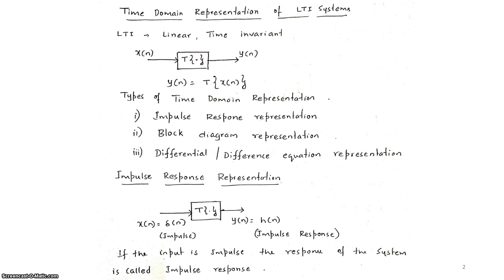Impulse response representation means we consider the input as an impulse. When an impulse x(n) is applied as input to a system, the resulting output is called the impulse response. So when the input is an impulse, the response of the system is called the impulse response.